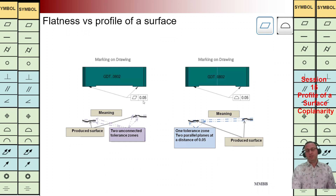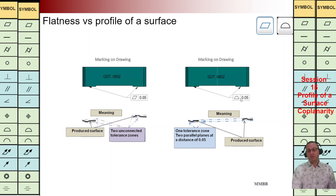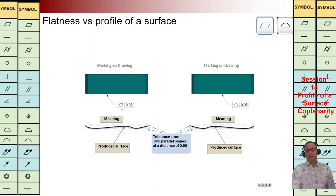Let's compare flatness and profile of surface. By flatness, we are going to control the flatness of each surface separately — we control the flatness of this surface and also of this surface, and they are not related to each other. But by using profile of surface, I'm going to check co-planarity — these two are related to each other. We are going to make a mid-plane for those two wavy surfaces, and based on that we make this tolerance zone.